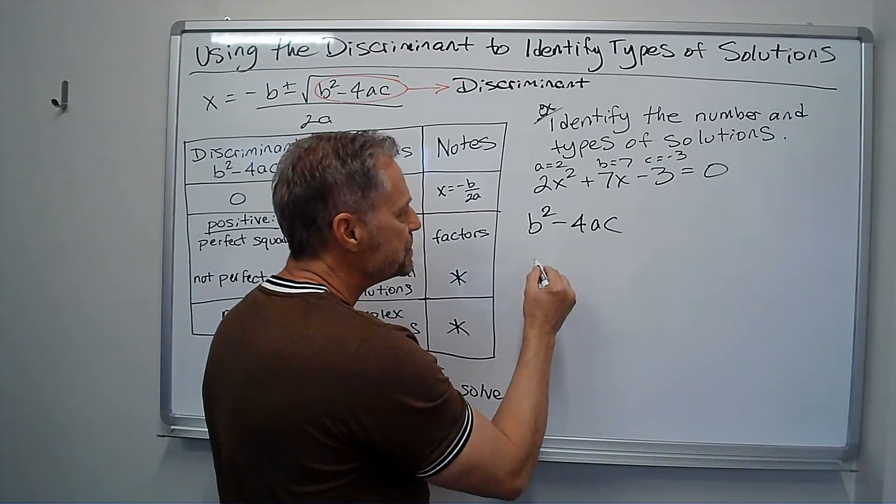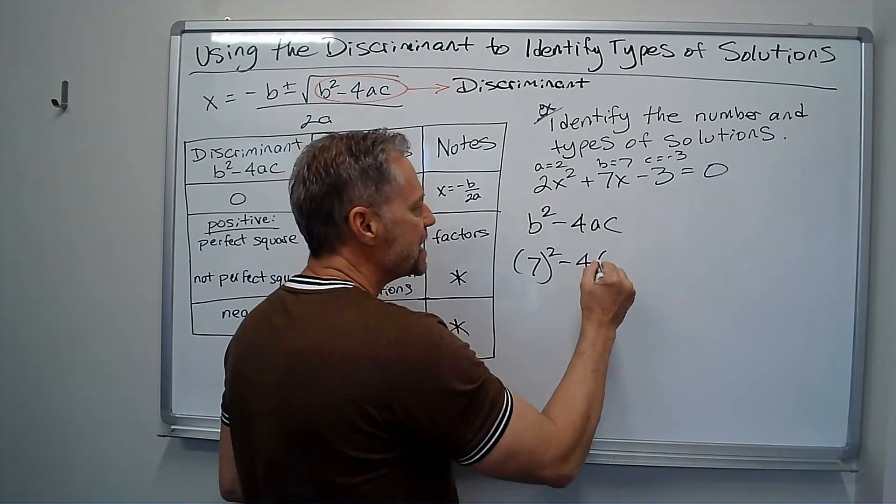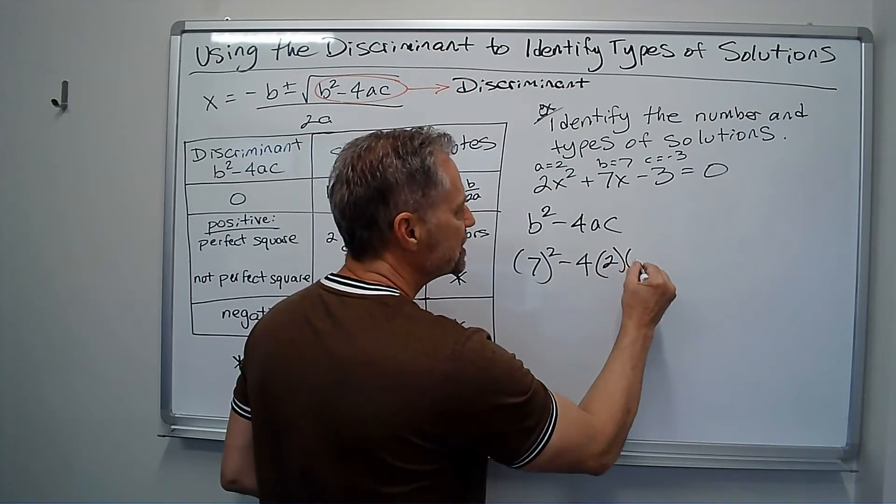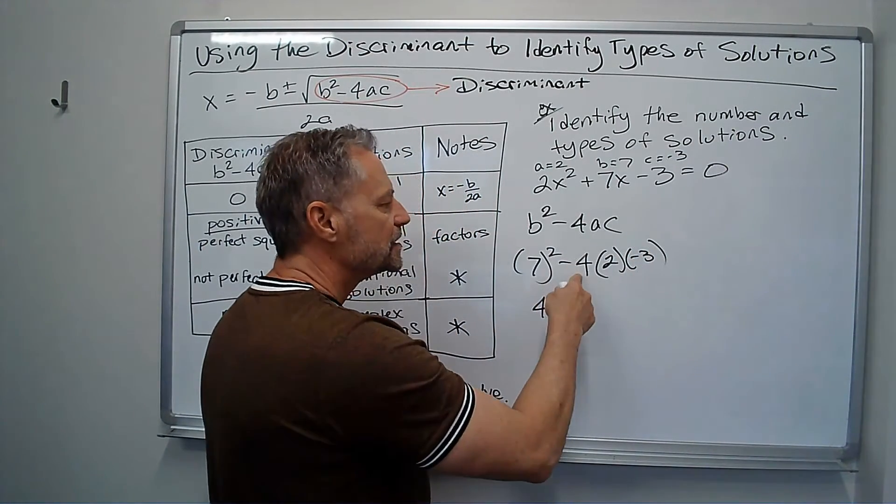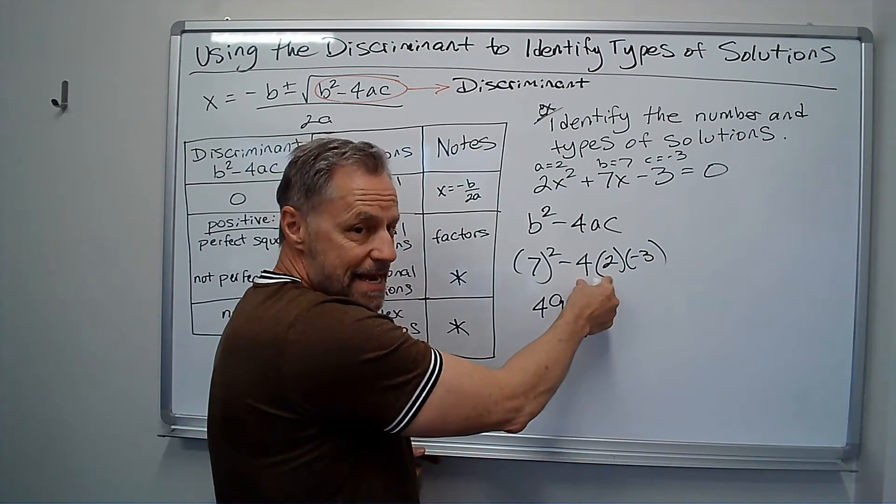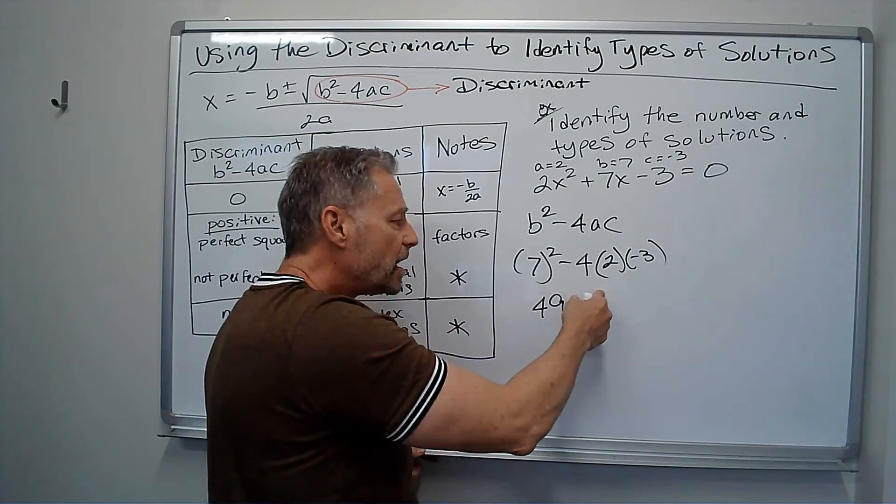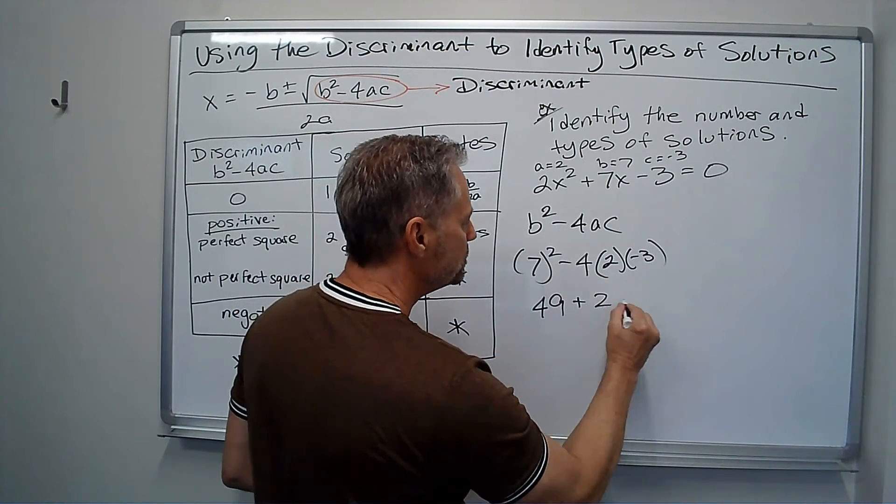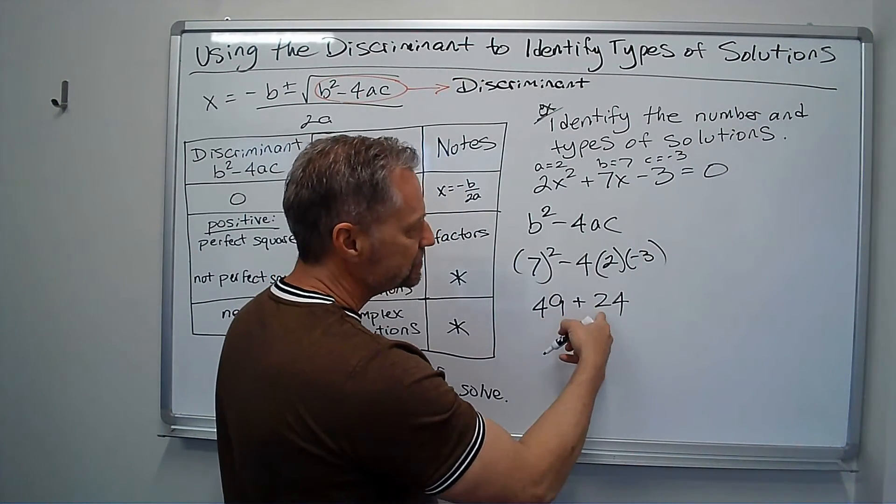So now when I plug these in, I get b², which is 7², minus 4 times a, which is 2, times c, which is -3. So I get 49. Let's see. -4 times 2 is -8, times -3 is positive 24. So that's 73.